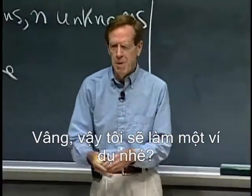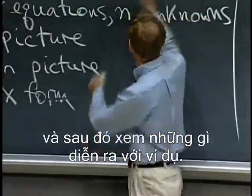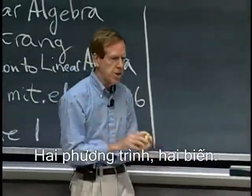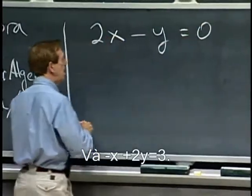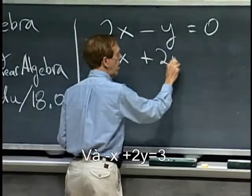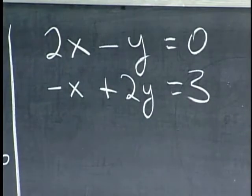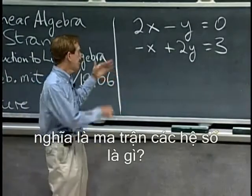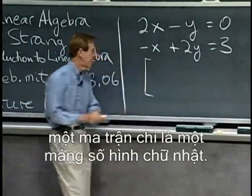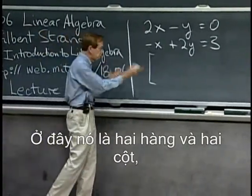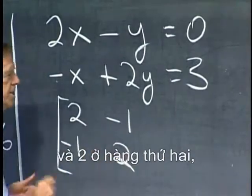So can I do an example? The whole semester will be examples and then see what's going on with the example. So take an example. Two equations, two unknowns. So let me take 2x minus y equals zero, let's say. And minus x plus 2y equals three. I can even say right away, what's the matrix, what's the coefficient matrix? The matrix that involves these numbers? A matrix is just a rectangular array of numbers. Here it's two rows and two columns. So two and minus one in the first row, minus one and two in the second row, that's the matrix.